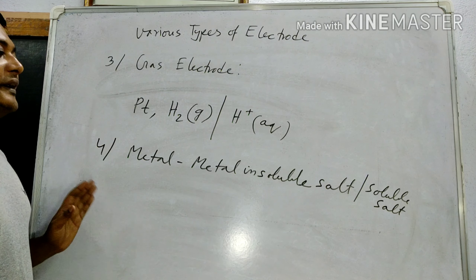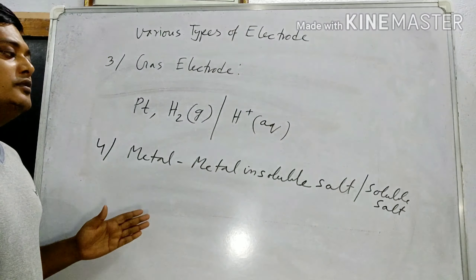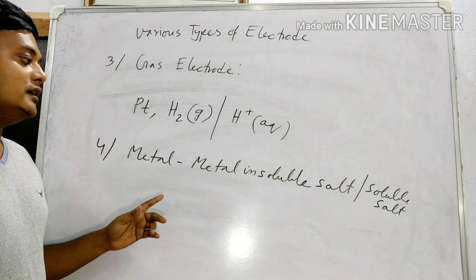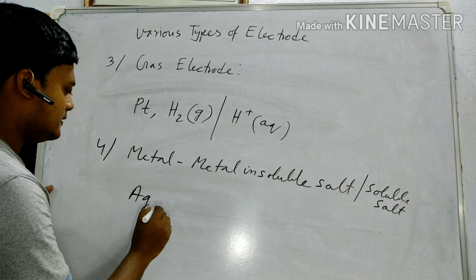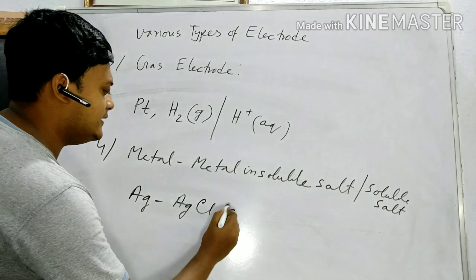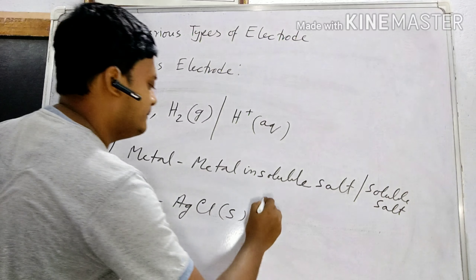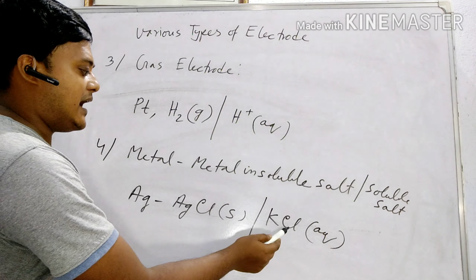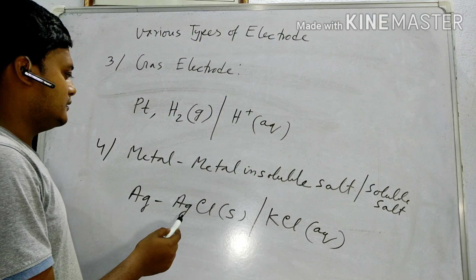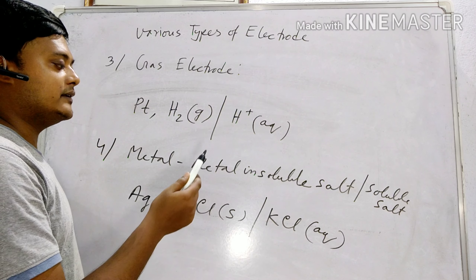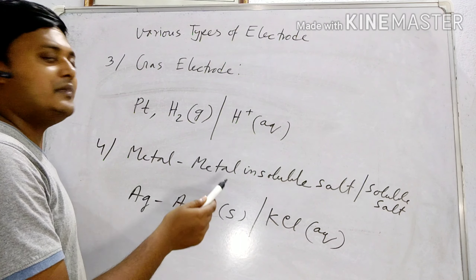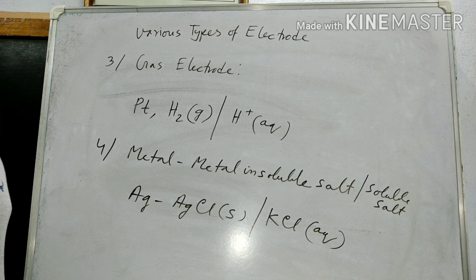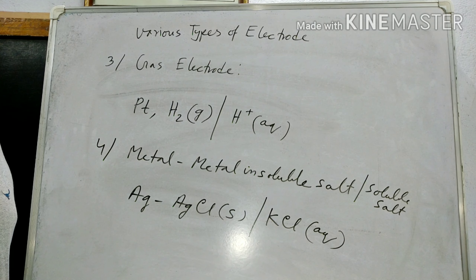The fourth type is the metal-metal insoluble salt electrode, paired with a soluble salt having the same anion as the insoluble salt — for example, silver and silver chloride. Silver chloride is insoluble. Here the metal and a sparingly soluble salt of the metal are dipped in an aqueous solution of another soluble salt whose anion is the same as that of the sparingly soluble salt.